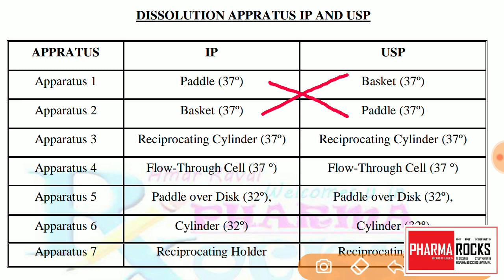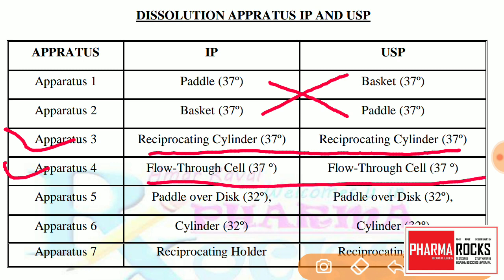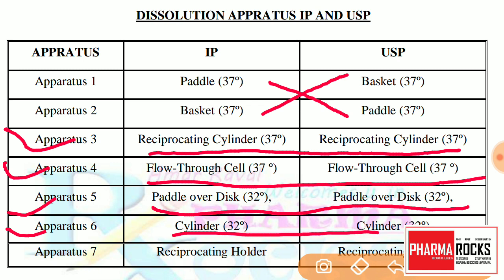This is the only confusing part in the Dissolution test apparatus. After that, apparatus number 3 is the same for both — reciprocating cylinder. Apparatus number 4 is a flow-through cell for both the IP and USP. Dissolution test apparatus 5 is the paddle over disk, the same for both. Apparatus number 6 is the cylinder type and its temperature is maintained at 32 degrees Celsius, and apparatus number 7 is the reciprocating holder.